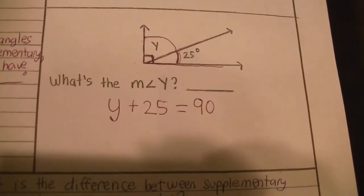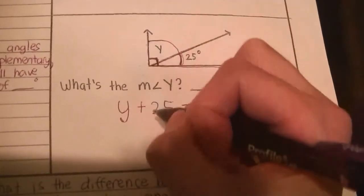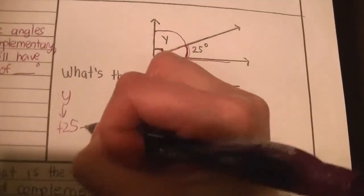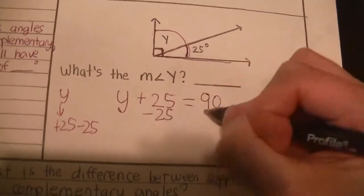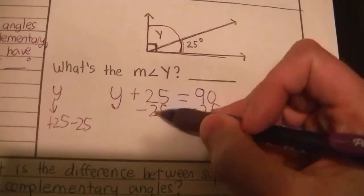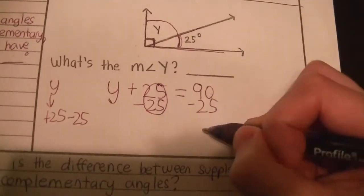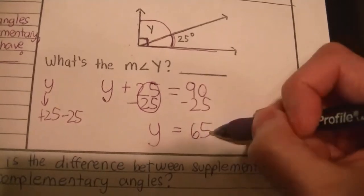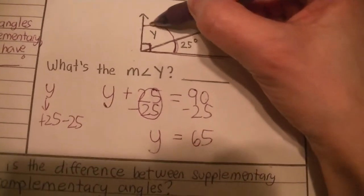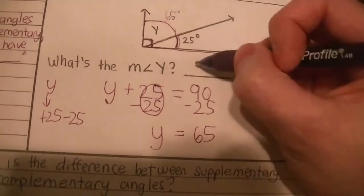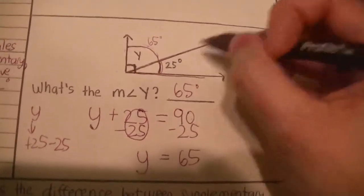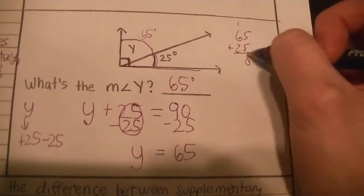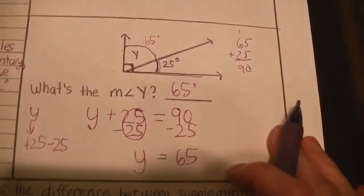From here, build and solve to find the value of Y. We start with Y, then add 25: Y + 25 = 90. The inverse operation of adding 25 is to subtract 25 — do that to both sides. 25 minus 25 is 0. 90 minus 25 is 65. So Y = 65°. One way to check: 65 + 25 = 90, and since they are complementary angles, they should have a sum of 90 degrees — and they certainly do.